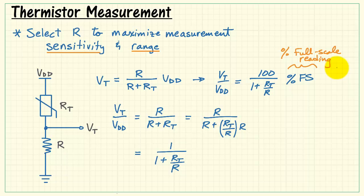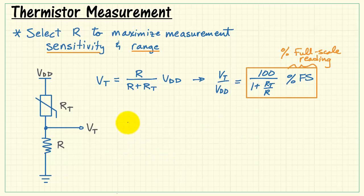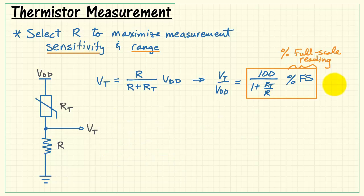This equation relates the percent full scale reading to the normalized thermistor resistance, that is, normalized relative to the fixed value resistor.